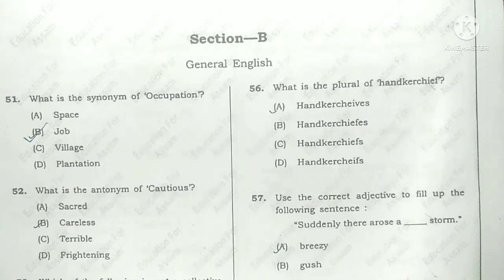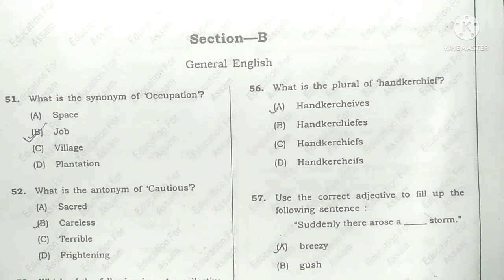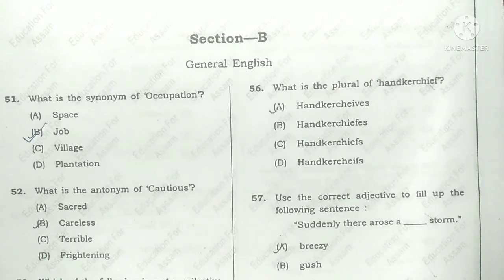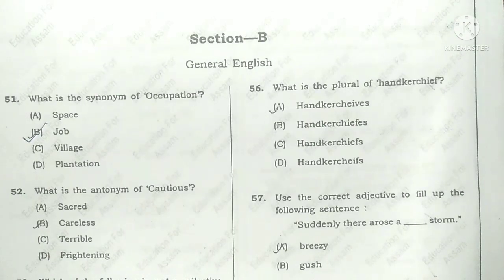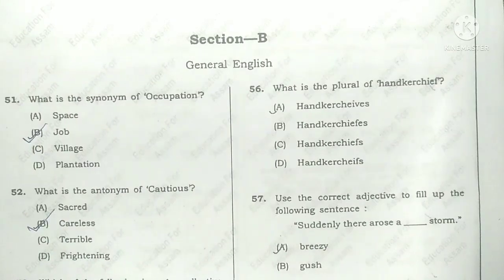Question number 52 is: what is the antonym of cautious? The antonym is the opposite word. Cautious means careful — be cautious means be careful. So, the opposite of cautious means careless. So option B is correct — careless.